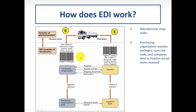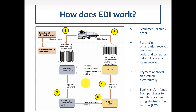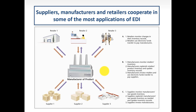Step five: the manufacturer ships the order. The purchasing organization receives the packages, scans barcodes, and compares data to invoices and actual items received. Payment approval is transferred electronically, and a bank transfers funds from the purchaser to the supplier's account using electronic fund transfers — step eight. This illustrates the electronic flow of proposals, contracts, and documents among companies via a private network.